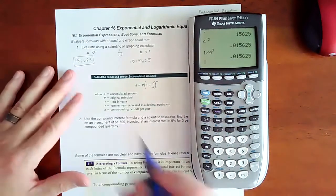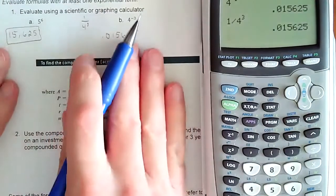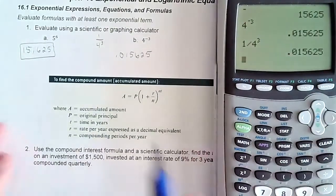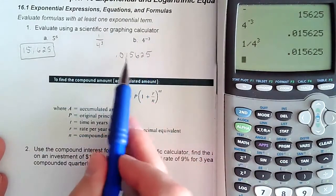All right. So a negative exponent has a tendency—if this value is bigger than one—to make your final value smaller. So typically something raised to a negative exponent is going to make it smaller.